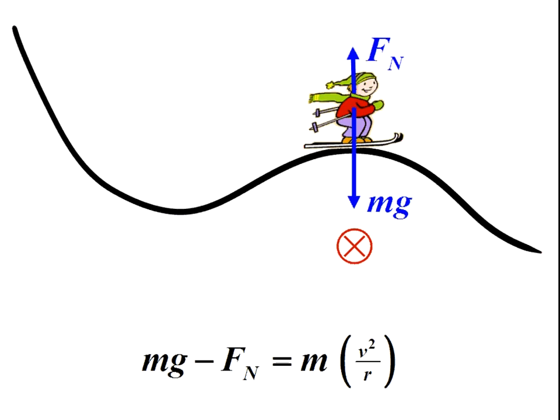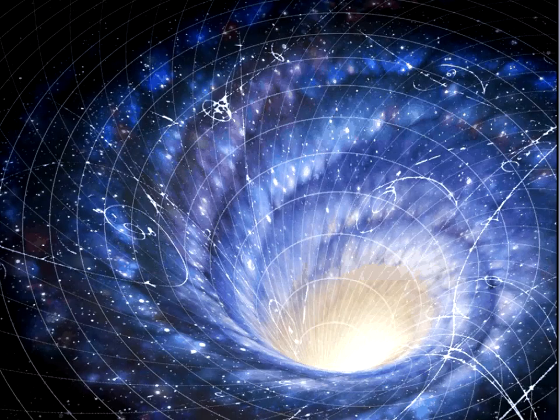This equation tells me that if you go faster and faster, the F_n is going to get smaller and smaller. So if you go too fast, you'll be wondering, where's my F_n? Oh yeah, there it is. And that's kind of cool.